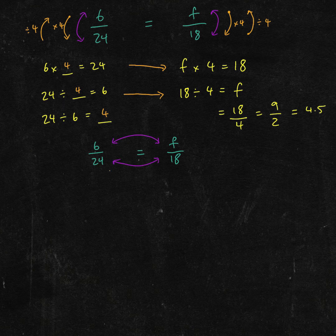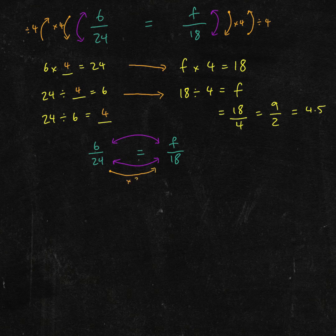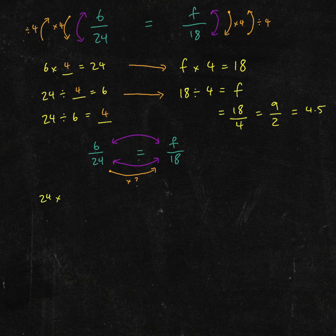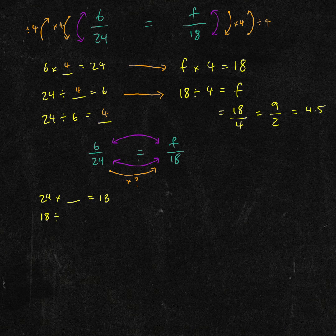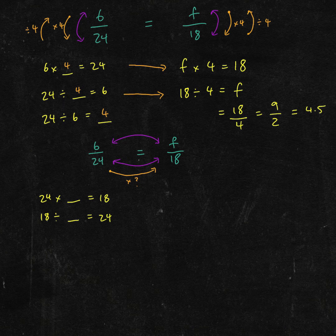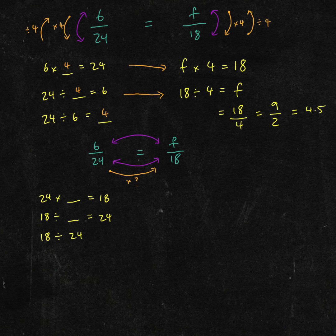So 24 times what equals 18. Again, inversely, you can write 18 divided by what equals 24, or just 18 divided by 24 equals what?